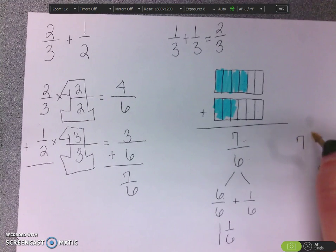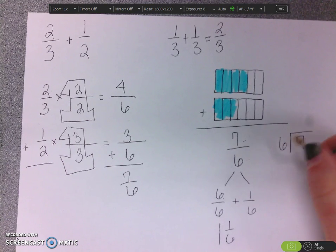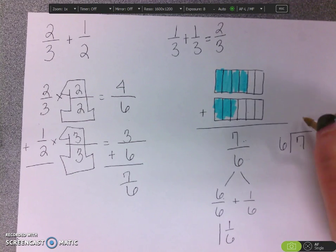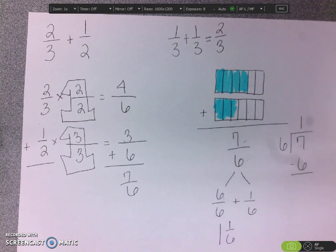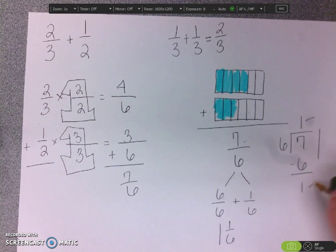If you didn't want to decompose, you could also divide it. Six times what gets the closest to seven without going over? That would be one. One times six is six. And we subtract and get one. So our answer here would be one and one-sixth.